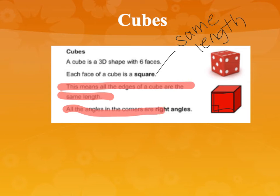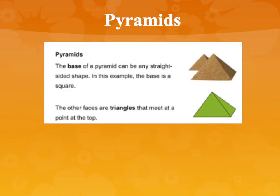All of the angles in the corners are going to be right angles, because that's what a square is. Next up we have pyramids. A good way to remember these — you can think of the pyramids in Egypt. Those big tall sculptures are pyramids.